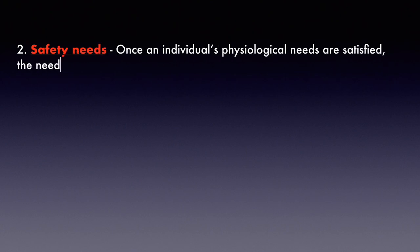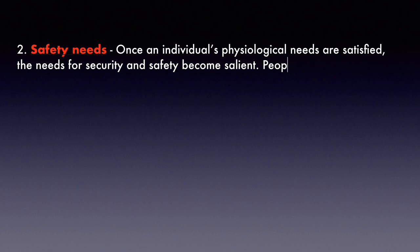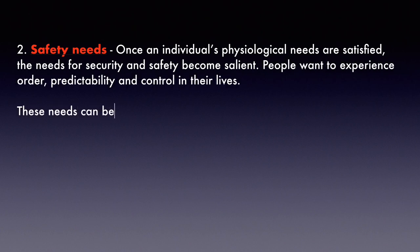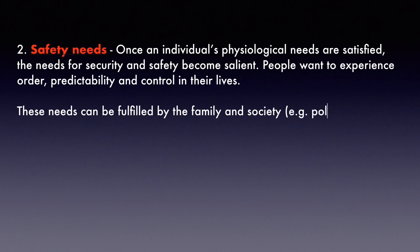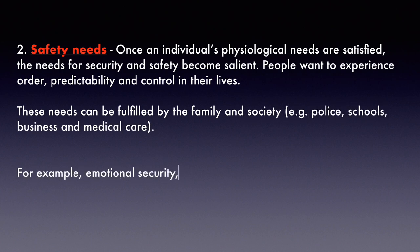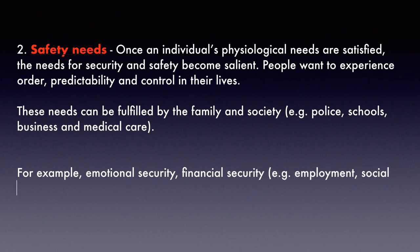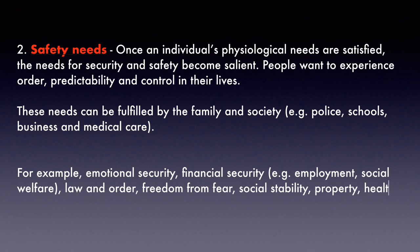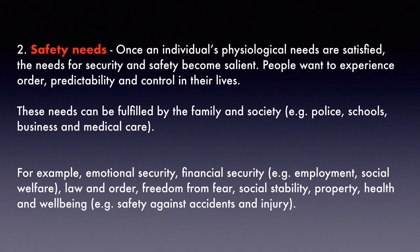Once an individual's physiological needs are fulfilled, the needs for security and safety become more important. People want to experience order, predictability, and control in their lives. These needs can be fulfilled by family and society — police, schools, businesses, and medical care. Examples include emotional security, financial security, law and order, freedom from fear, social stability, property, health and well-being, and safety against accidents and injuries.